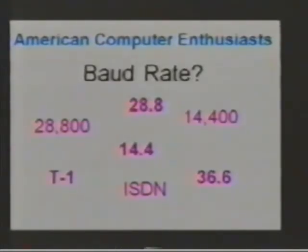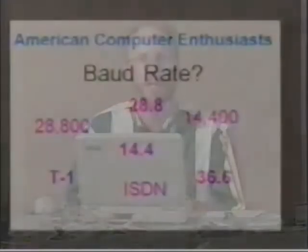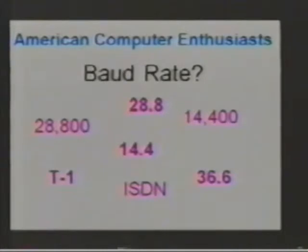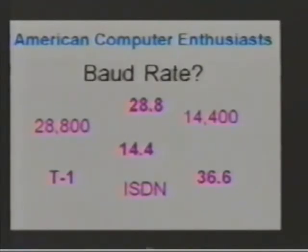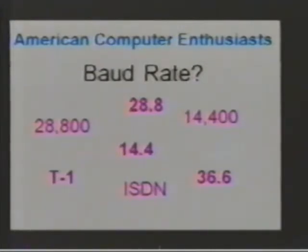With communications, you hear about modems and baud rates and all kinds of things. One of the most confusing things right now is what's the difference between the different baud rates? What's ISDN? What's T1? What's a digital line versus an analog line? Right now, most computers you buy off the shelf are coming with either 14.4 — which is the same as 14,400 — or 28.8, which is the same as 28,800. They're all the same thing, just computer lingo.